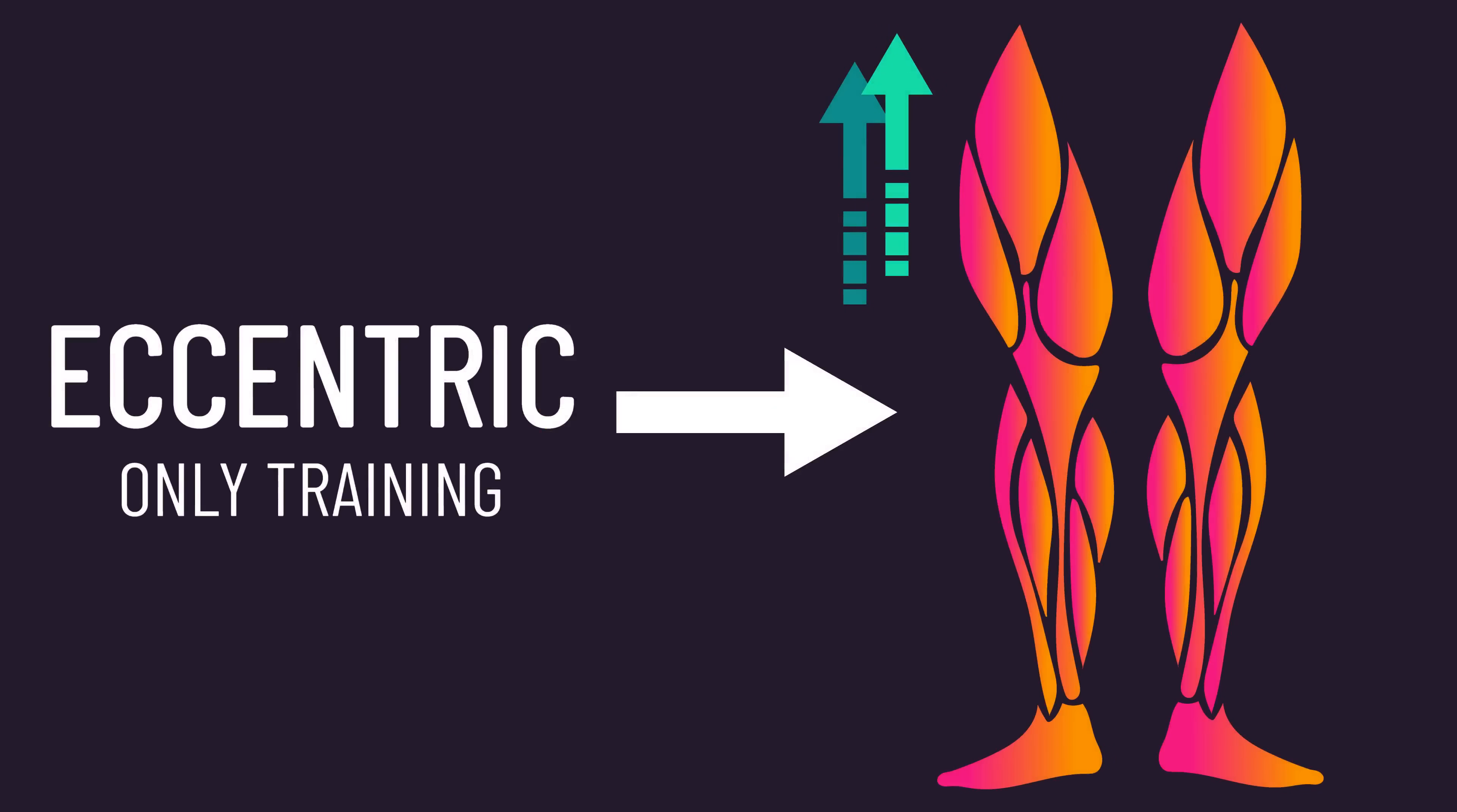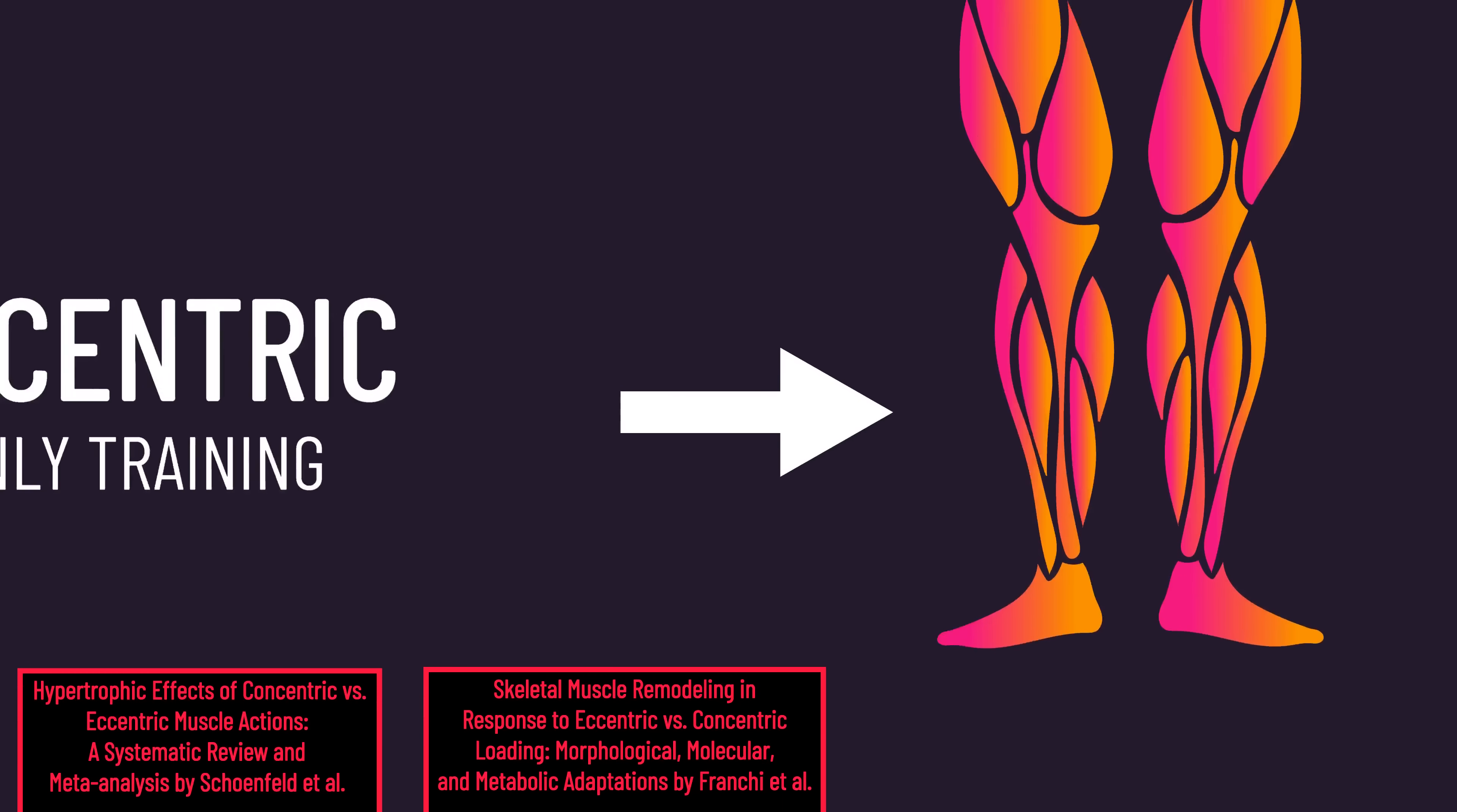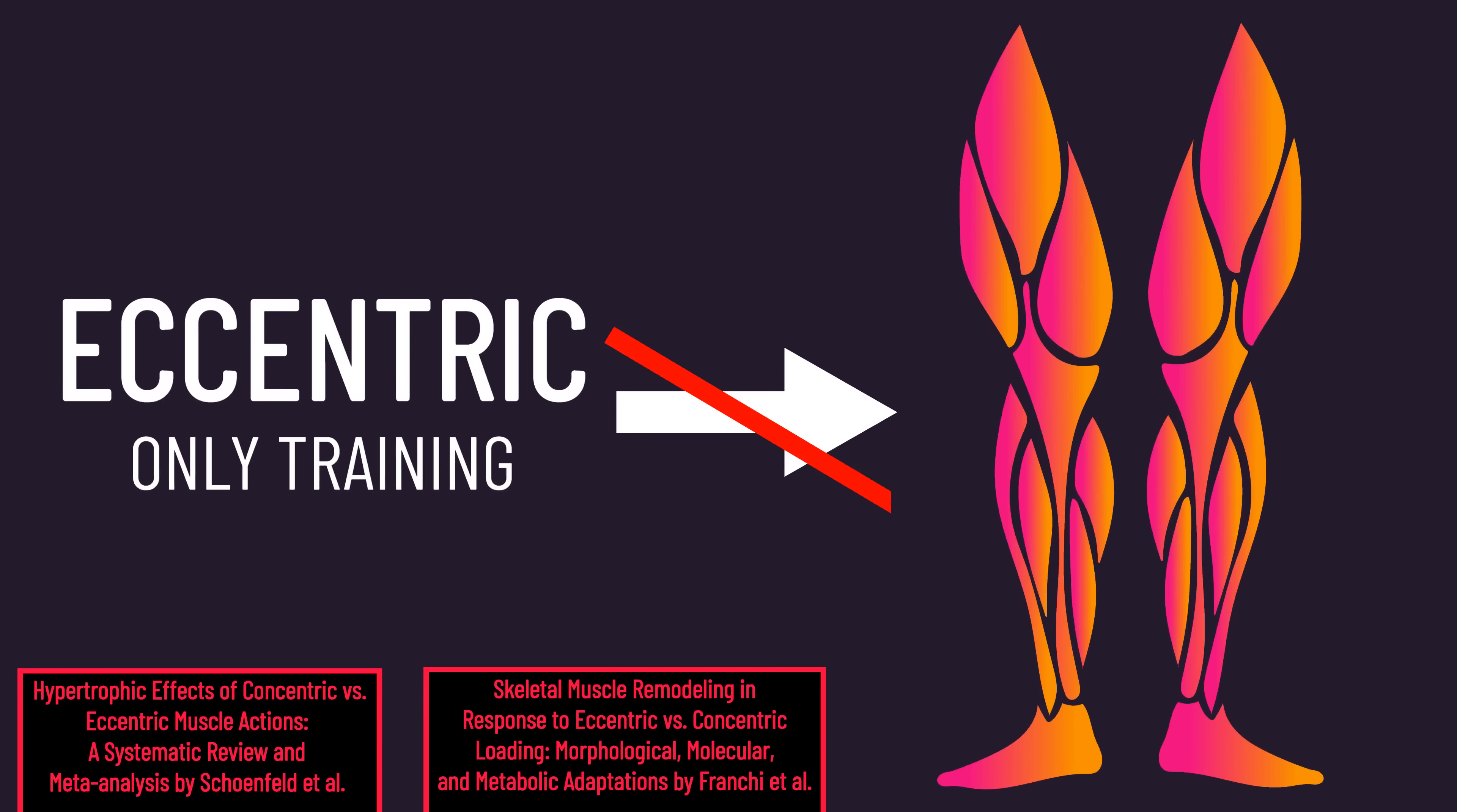The idea eccentric-only training produces more hypertrophy comes from older research conducted before 2010. Since then, more research has come out, and the whole body of evidence fails to demonstrate eccentric-only training is superior.